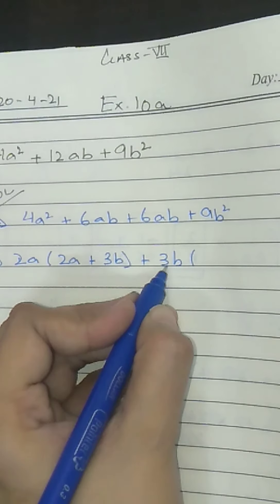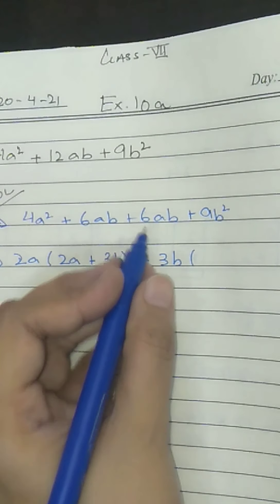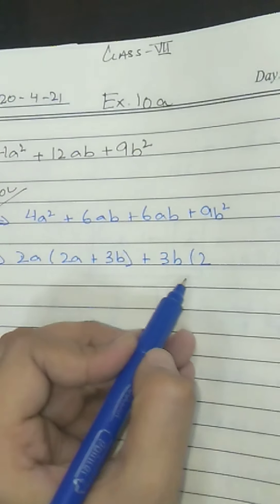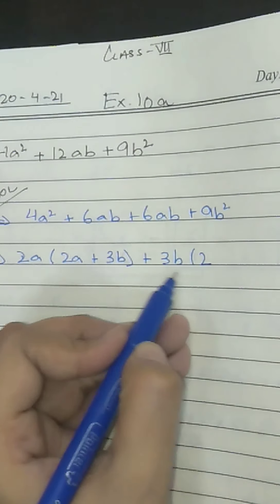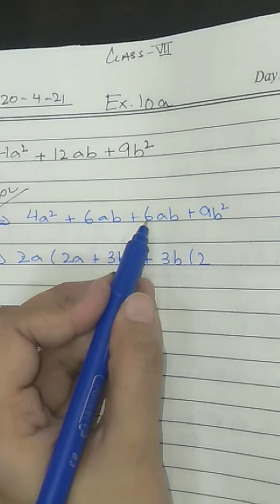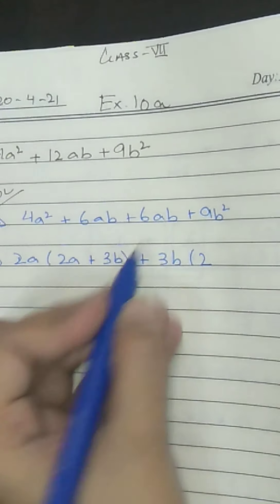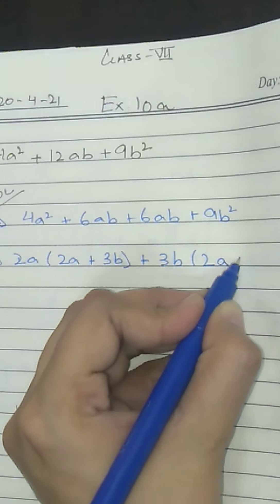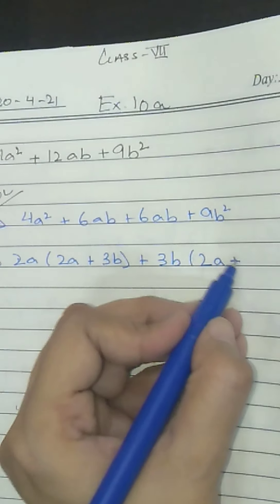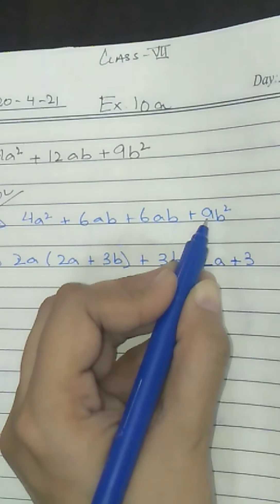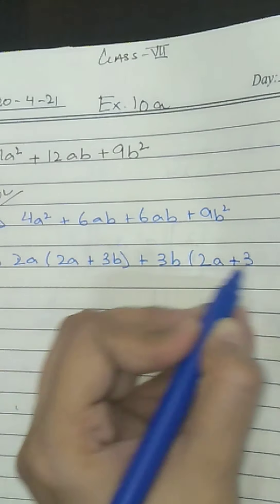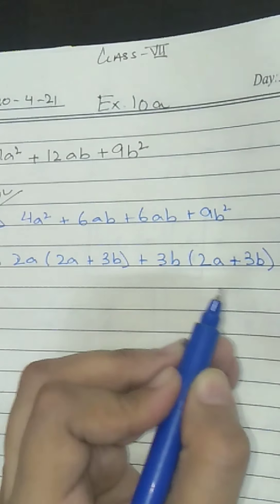Again just find out the common from here. 3 times 2 is 6, 3 times 3 is 9, so 3 is common over here and B is in both, so B comes out. Then what's remaining? 3 times 2 is 6, so 2 comes inside. Those things remain which multiply to give you this value. A is remaining. 3 times 3 is 9, B is outside so 1 comes inside.